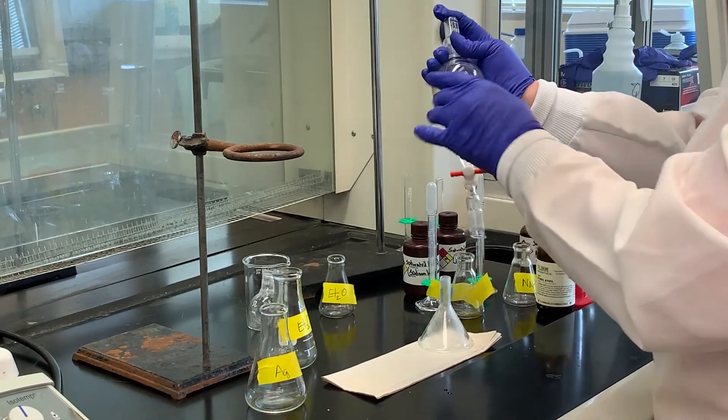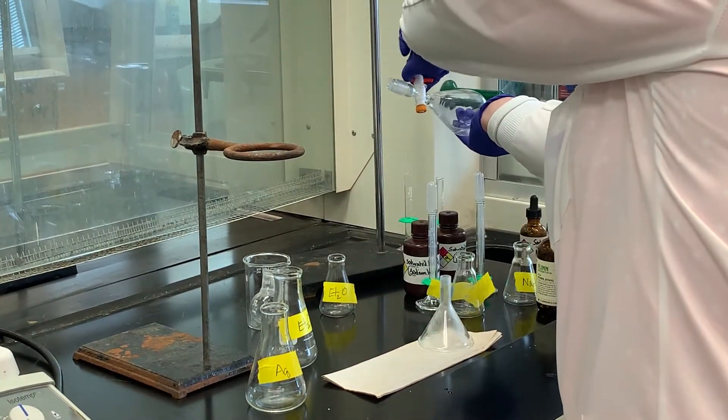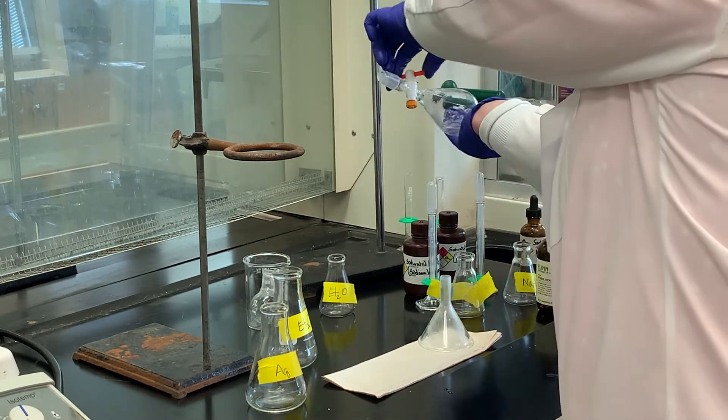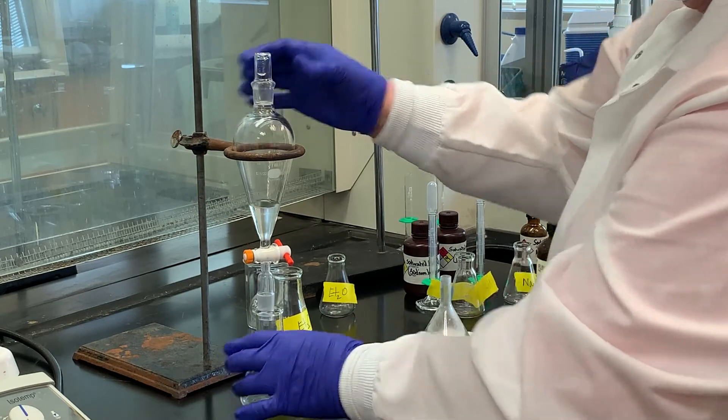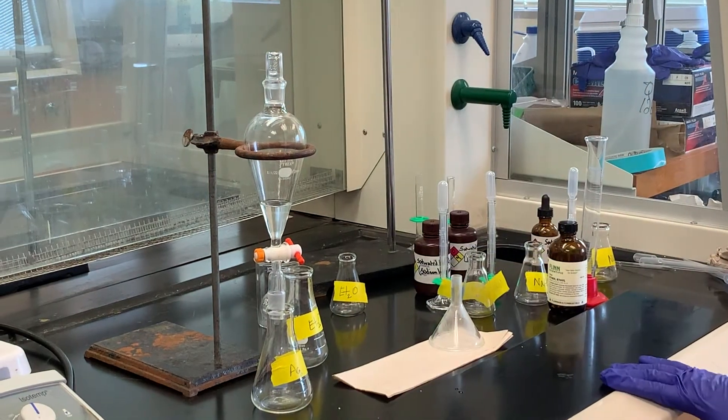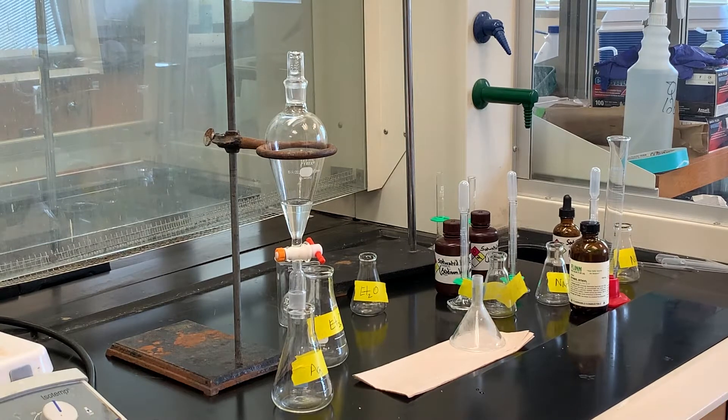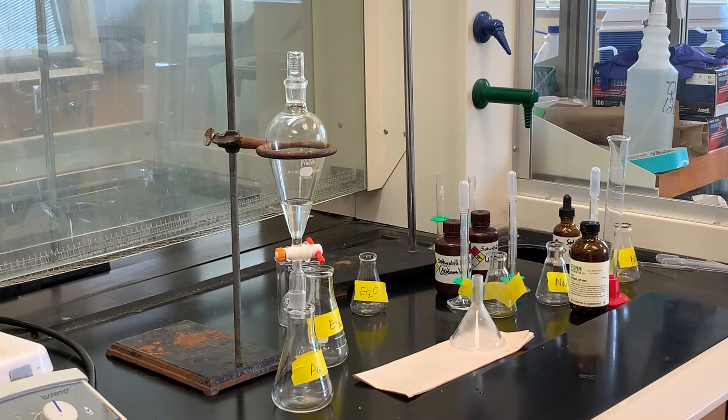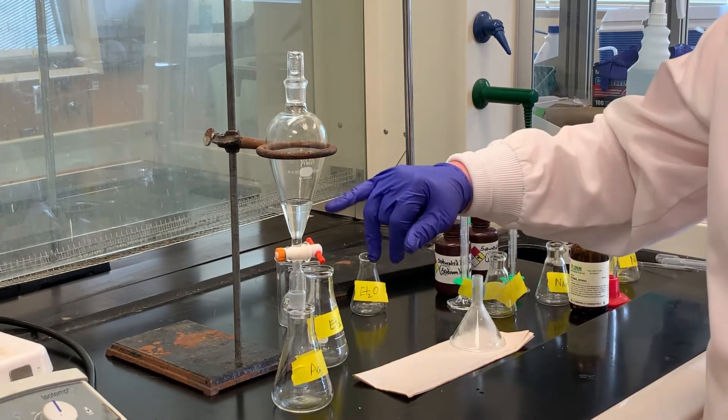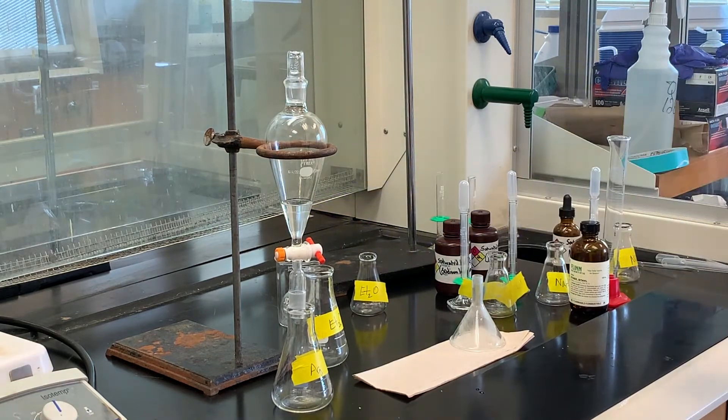So I'm going to shake this and vent it. We'll just let that have time to separate the layers. You could do the test tube test again if you wanted to, just to see which layer is which. The ether does have a lower density than that of the aqueous and the bleach would have been in the aqueous layer.